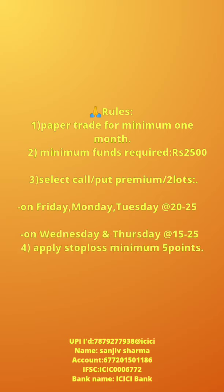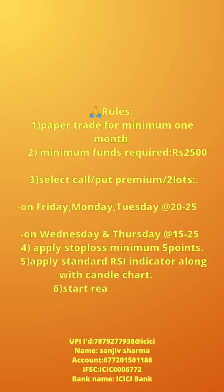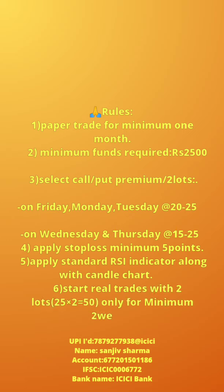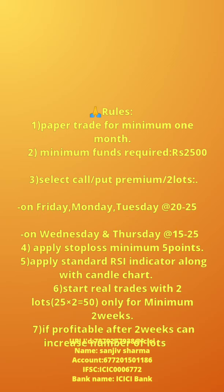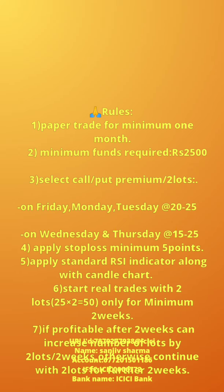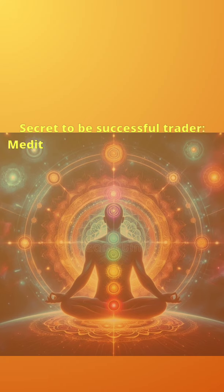4. Apply stop loss minimum 5 points. 5. Apply standard RSI indicator along with candle chart. 6. Start real trades with 2 lots — that is 25 per lot into 2 equals 50 — only for minimum 2 weeks. 7. If profitable after 2 weeks, can increase number of lots by 2 lots every 2 weeks; otherwise continue with 2 lots for a further 2 weeks.